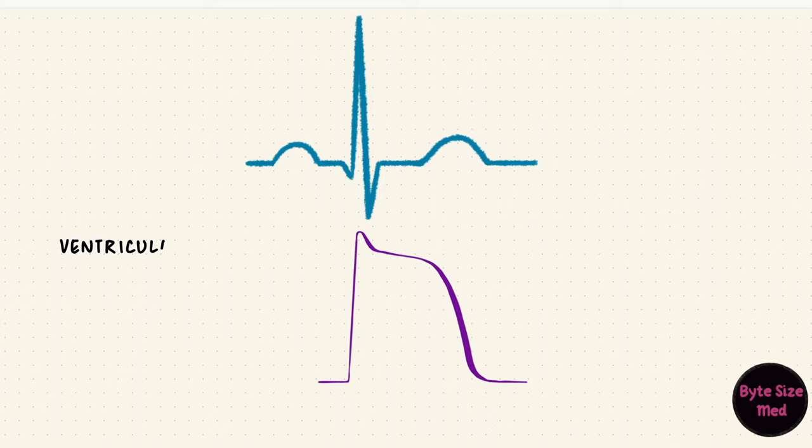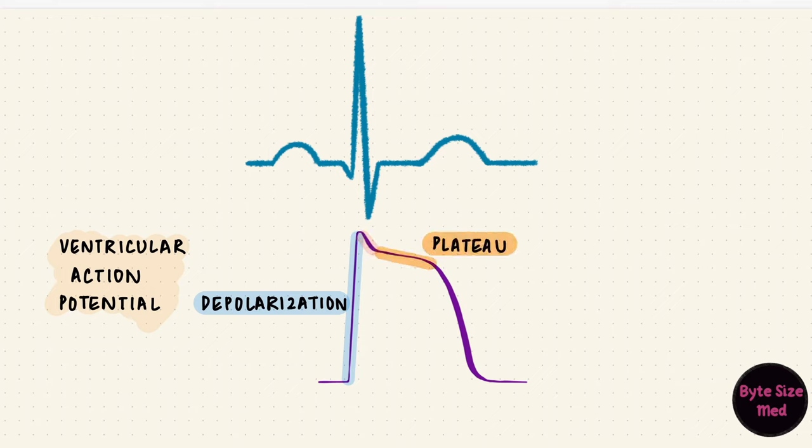This is what the ventricular action potential looks like. It's got depolarization, a little repolarization, a plateau, and repolarization back to the resting membrane potential. This is just for the ventricle. Now action potentials get conducted between the cells of the ventricle. So on the ECG, the waves are the mean vectors of those depolarization and repolarization waves through the whole ventricle. The QRS complex represents depolarization of the ventricles. The plateau phase is represented by the ST segment, and the T wave represents repolarization.